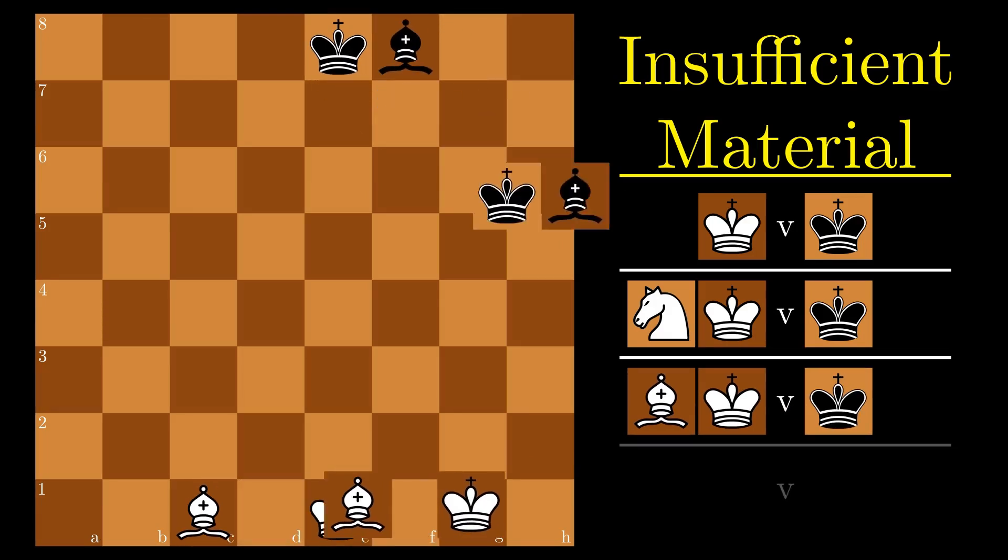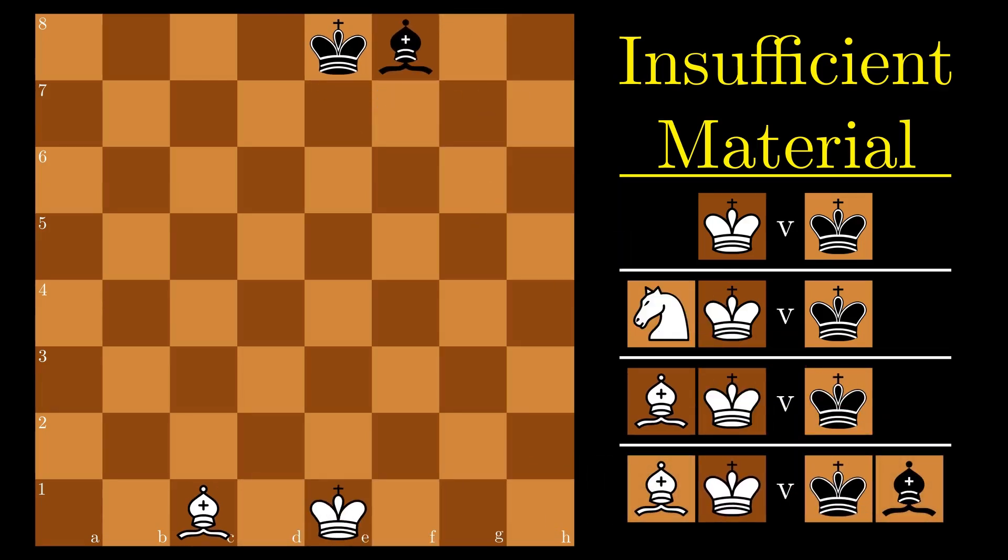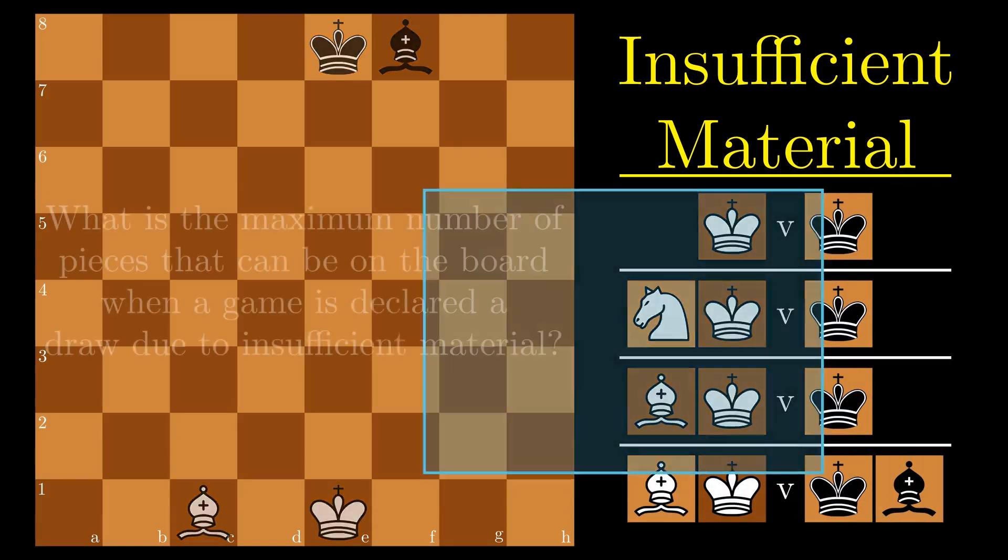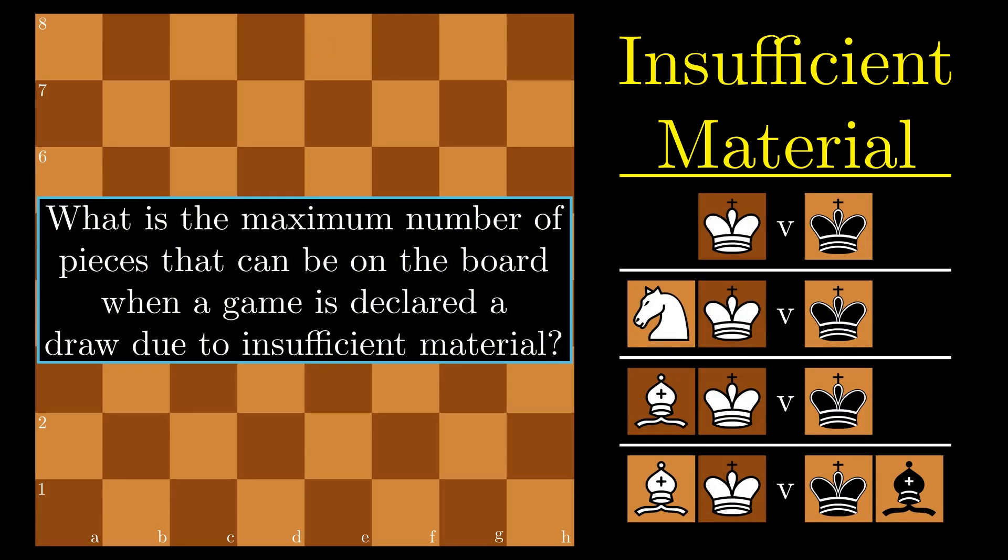However, occasionally each side can have a bishop, and it still isn't good enough. And that's it, because under no circumstances can checkmate be delivered or stumbled into accidentally with these combinations. But does that mean four pieces is the maximum number that can be on the board for a game to be drawn due to insufficient material? Think about it, and I will reveal the answer at the end of the video.